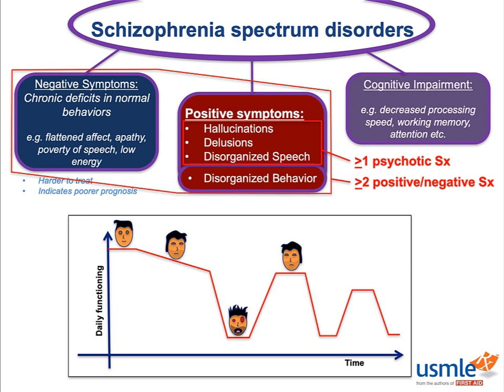One of the main things that distinguishes the psychotic disorders is the elapsed time. Schizophrenia, for example, requires that the behavior last at least six months. But that's six months from the time it started, not necessarily six straight months of frank psychosis. Remember, the first psychotic episode is usually preceded by the prodrome, during which the patient may not necessarily meet the diagnostic criteria for schizophrenia.